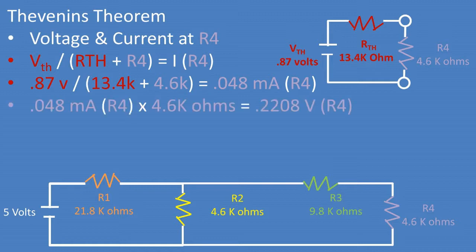Now we can take the current we found, and being in series the total current goes through each resistor. We can then use V equals IR and multiply current times the resistance of resistor 4 to get the voltage at resistor 4. We get a voltage of 0.2208 volts at resistor 4.